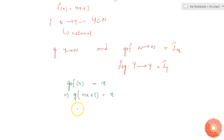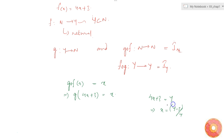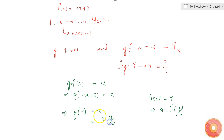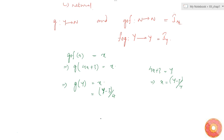We know that f(x) = 4x + 3 = y, which means x = (y - 3)/4. So if we replace 4x + 3 with y in the equation, it becomes g(y) = x = (y - 3)/4. Therefore g is defined such that g(y) = (y - 3)/4.